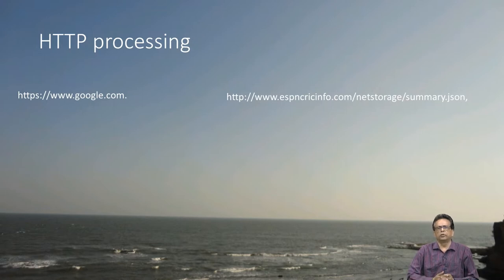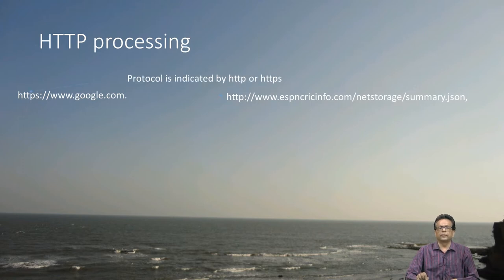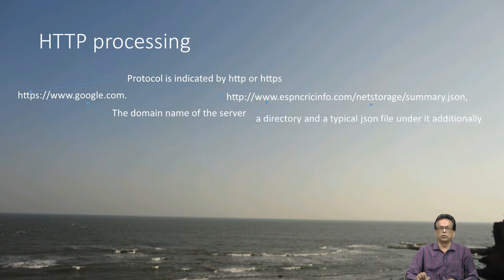There are two examples: www.google.com and www.espninfo.com, and a few other things which are part of it. The protocol is indicated by either HTTPS or HTTP. The other part, www.google.com or espninfo.com, is the domain name. In case number one on the left hand side, Google, we do not have anything after google.com, but in the other case, we have a directory and a typical JSON file under it.